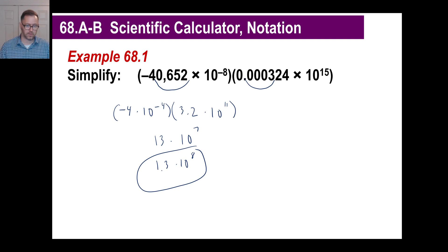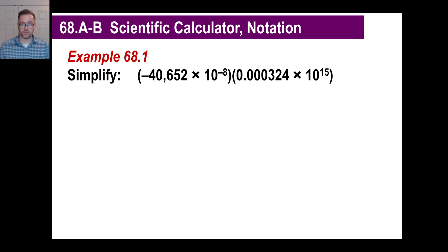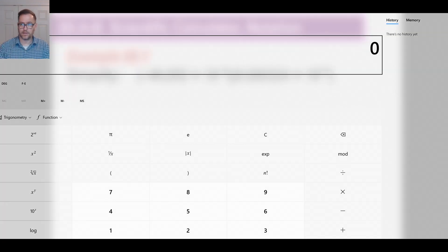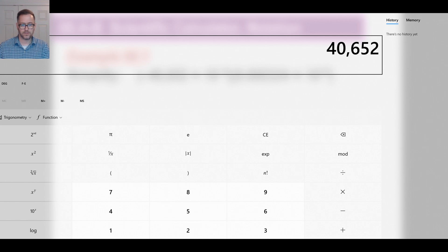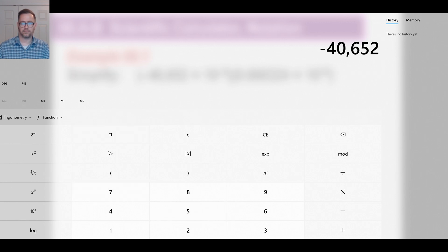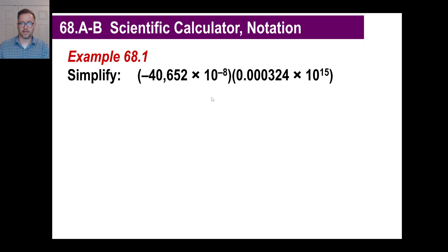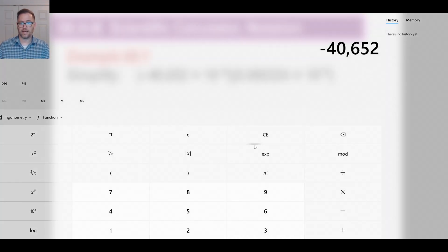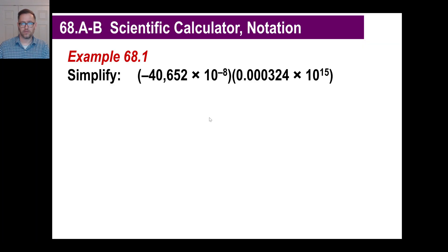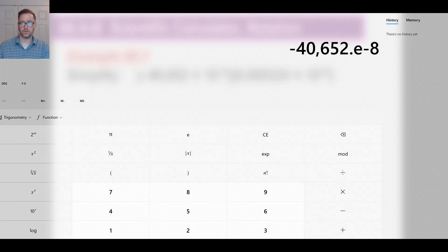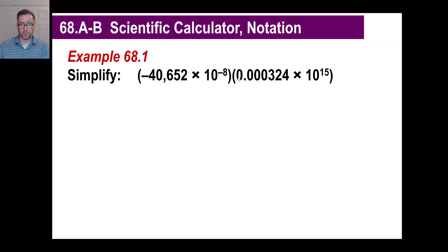So our guess is somewhere around 1.3 times 10 to the 8th power. Let's do this the actual calculator way. We're going to enter negative 40,652 — there's a button to make that negative, not a minus sign. Then that is times 10 to the negative 8th power: push the exponent button, type 8, then push the negative button to make it to the negative 8th power.